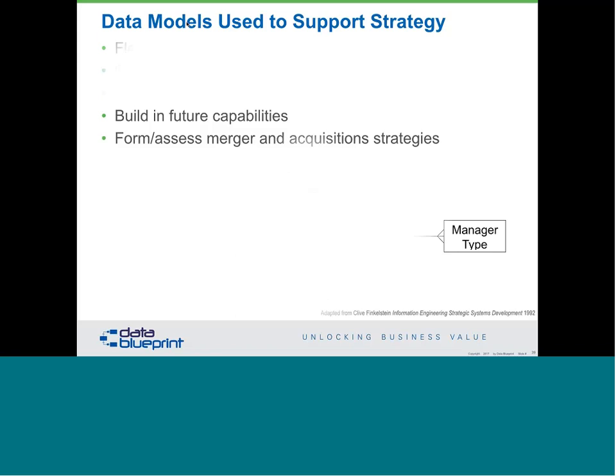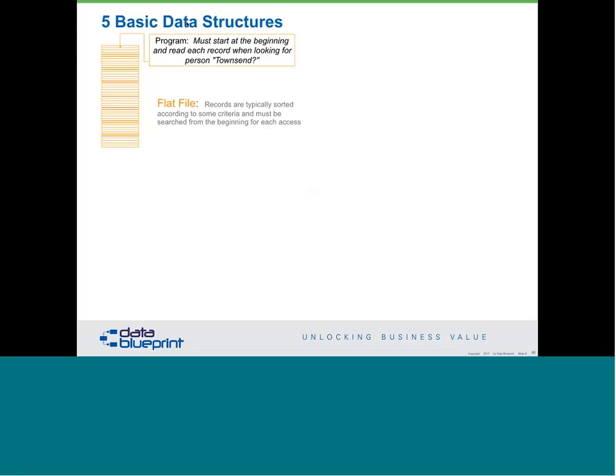Let's take a look at five basic data structures in the database world. There is a flat file — just something that starts and works its way through. To determine if something is in the contents, you've got to read everything. If I'm looking for something named Townsend, I start at the beginning and go all the way through. That is a very efficient data structure for certain types of problems and a very inefficient one for others. The next is index sequential — also called VSAM files. An index is basically a trimmed-down version of the file; you start looking at the spot wherever you've statistically decided to make your breaks, and it works incredibly fast.